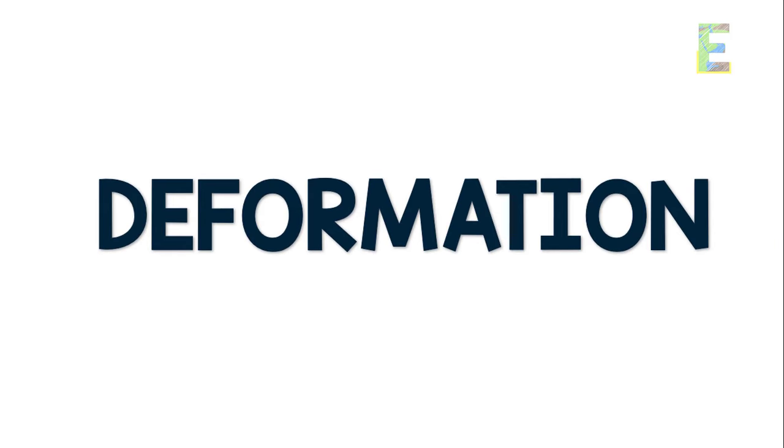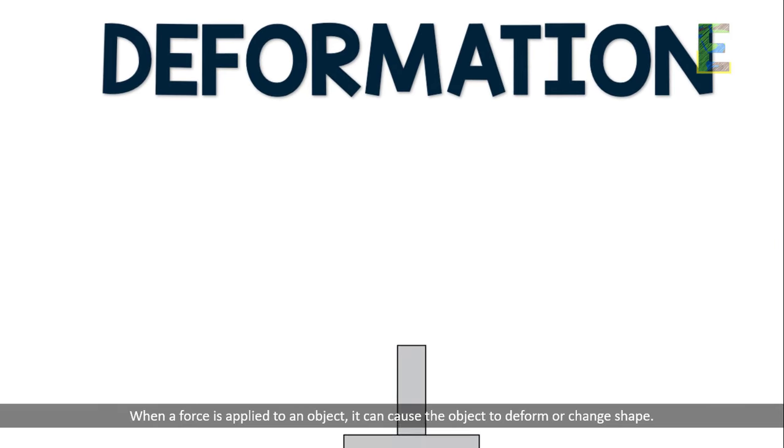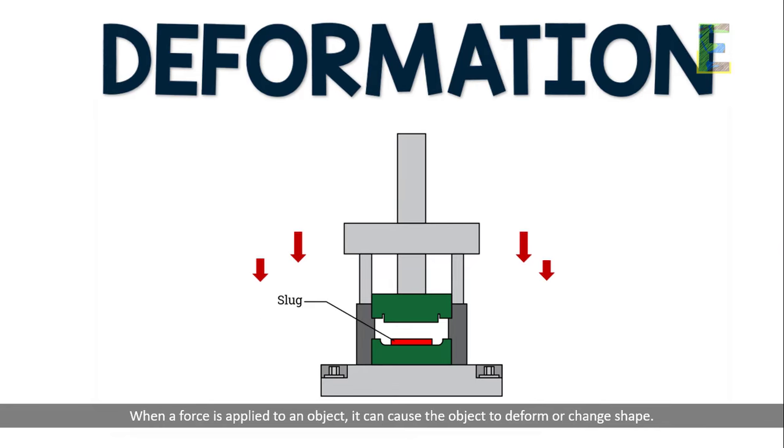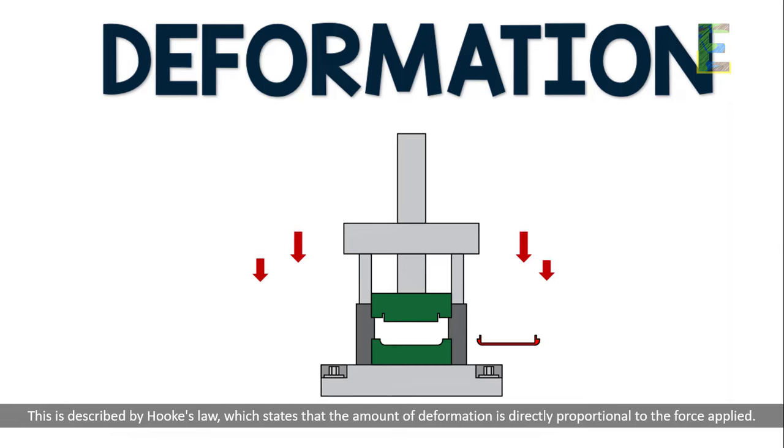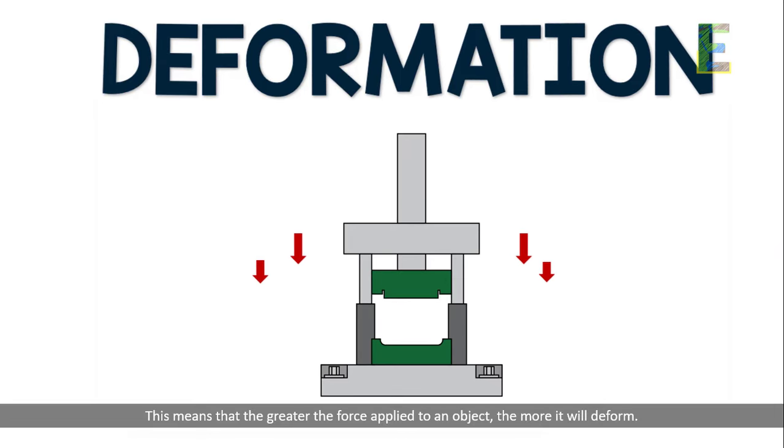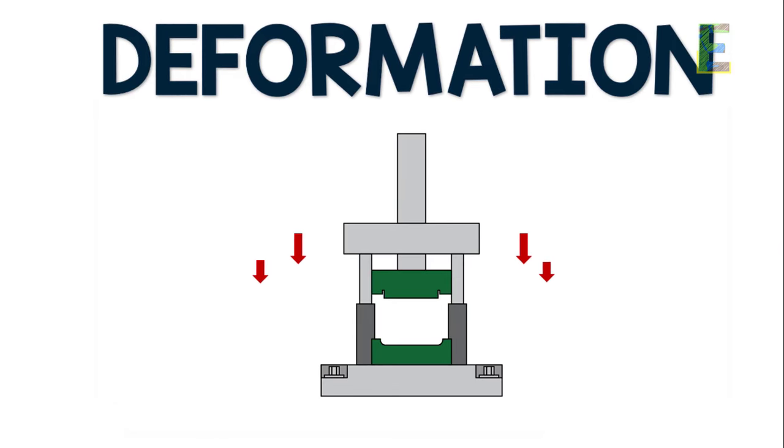Next, let's move on to deformation. When a force is applied to an object, it can cause the object to deform or change shape. This is described by Hooke's law, which states that the amount of deformation is directly proportional to the force applied. This means that the greater the force applied to an object, the more it will deform.